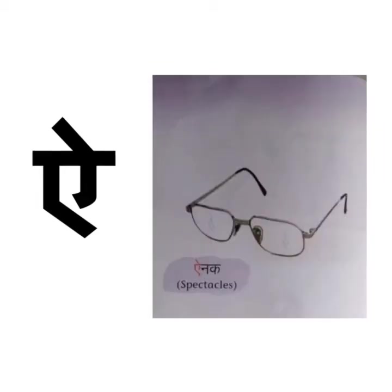Ay say ay nak. Ay nak means spectacles. You can also say specs. Specs are used to correct faulty vision or protect the eyes. Children, if you watch TV or mobile for a long time, it is not good for your eyes, and then there are chances of getting specs.